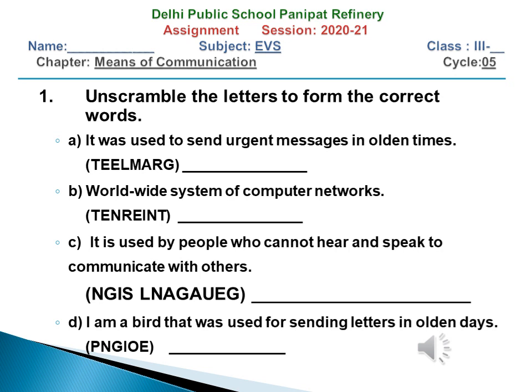Here is the first question. In this question you have to unscramble the letters to form the correct words. To unscramble the letters, hints are also given which will help you arrange them properly to get the correct word from those scrambled letters. The first hint is: it was used to send urgent messages in olden times — this service is not available now.